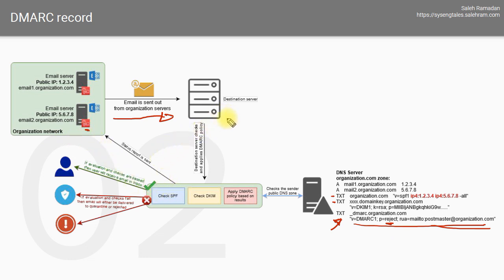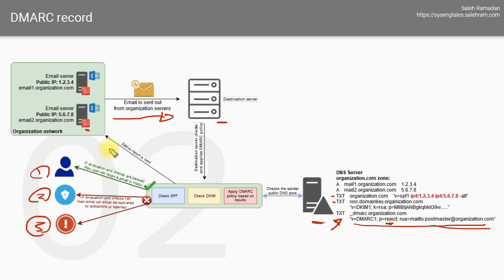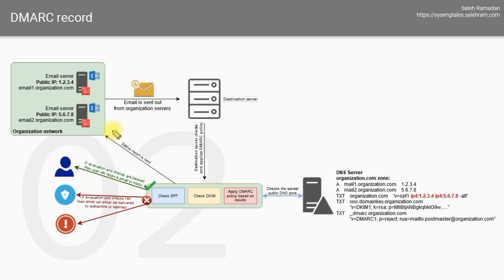The receiving server will get that email, check the DNS record for that domain, retrieve the DMARC record, evaluate it, and then apply one of three actions — accepting the email, putting it in quarantine, or rejecting it — and then the report will be sent. This is a high-level view of the DMARC evaluation process.